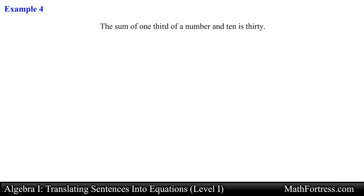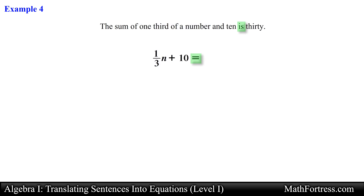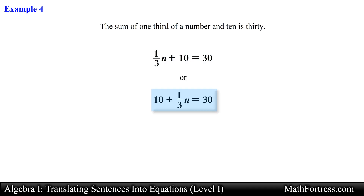Next example: 'The sum of one third of a number and 10 is 30.' Here we have a couple of key words. 'Sum' means we add two expressions. The first expression, 'one third of a number,' is denoted as one third times n because the word 'of' translates to multiplication. Then we add 10, include an equal sign because of the key word 'is,' and finally write 30. The final equation is one third n plus 10 equals 30, or equivalently 10 plus one third n equals 30.